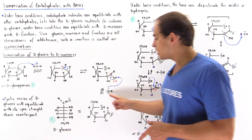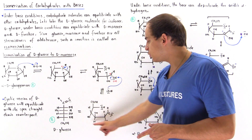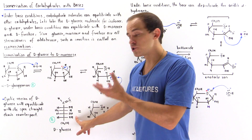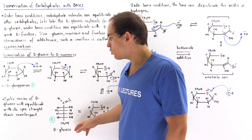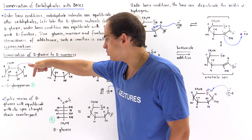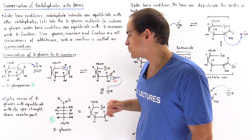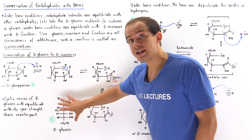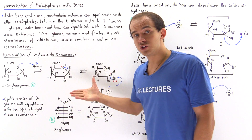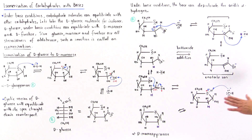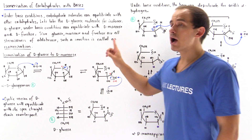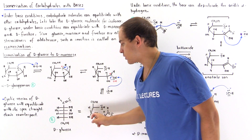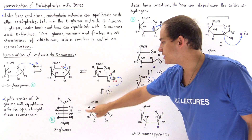We can also represent our molecule using a two-dimensional Fischer projection rather than a three-dimensional image. The cyclic version of D-glucose — specifically alpha-D-glucopyranose — equilibrates with its open straight-chain counterpart. It is this open straight-chain molecule, which we'll call molecule B, that will undergo a series of reactions to produce the final D-mannose molecule.